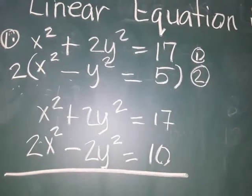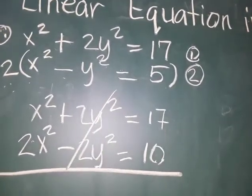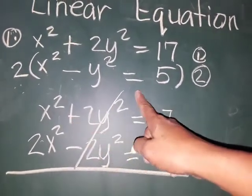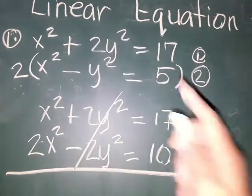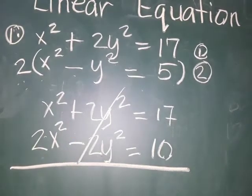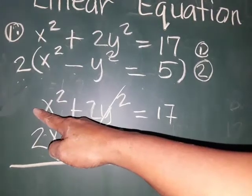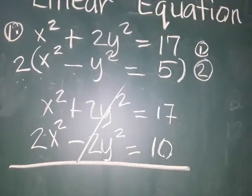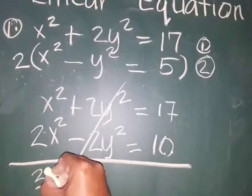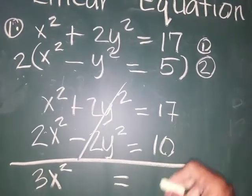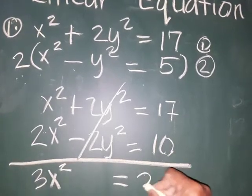Adding these two, we're going to cancel the middle term. Why? Because positive 2y squared plus negative 2y squared is equal to 0. Next, x squared plus 2x squared equals 3x squared. There's no visible 1 here, but that is automatically 1 — 1 is invisible. So we have 3x squared is equal to 17 plus 10, which is equal to 27.